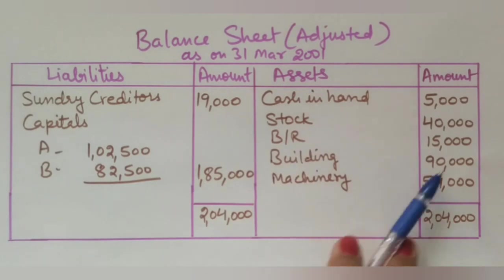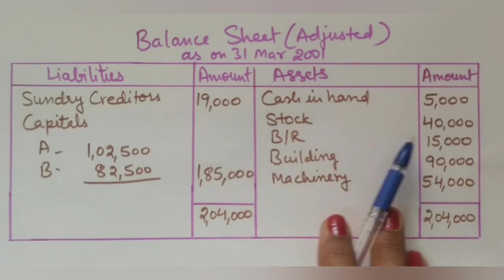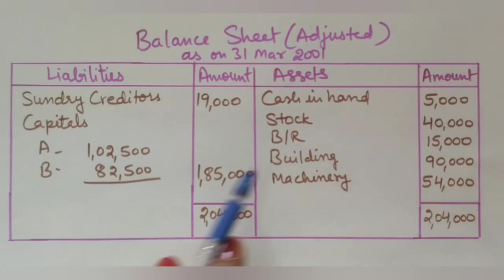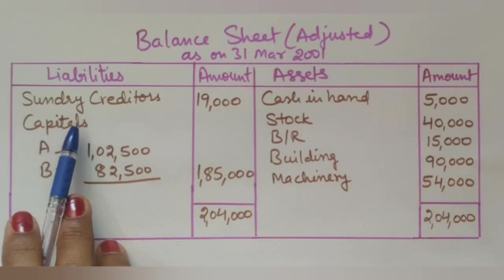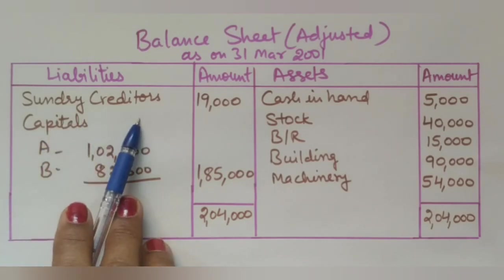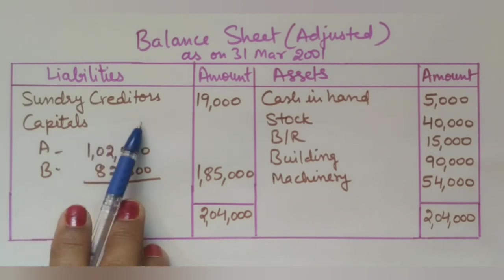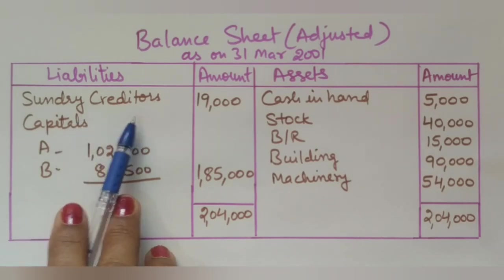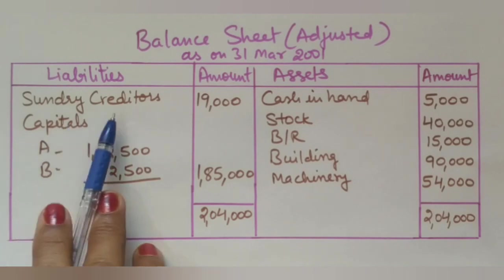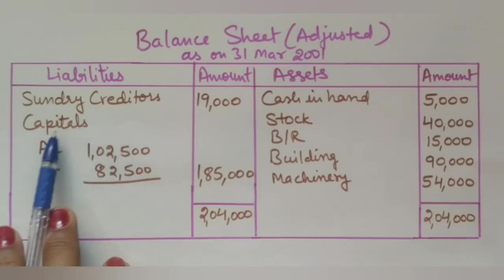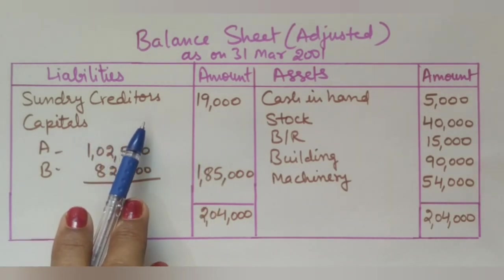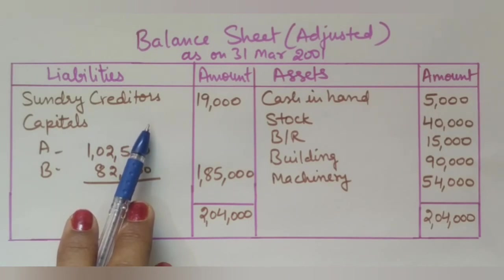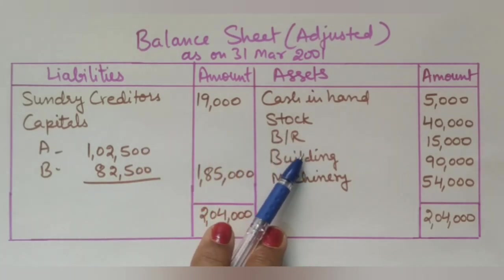The closing adjusted balance sheet shows all changed values and amounts. Importantly, the general reserve does not appear in the new balance sheet because it was distributed to partners and added to their capitals — it has been cleared. When preparing the new adjusted balance sheet, we do not show reserves or items that have already been distributed to partners.